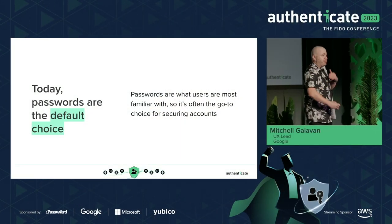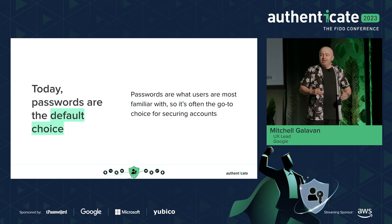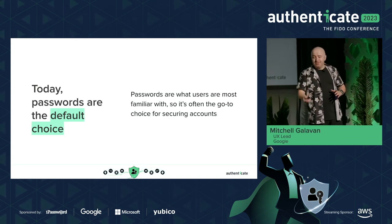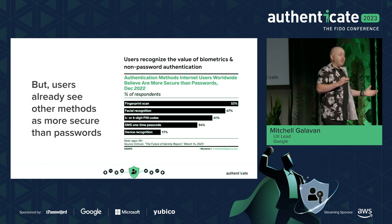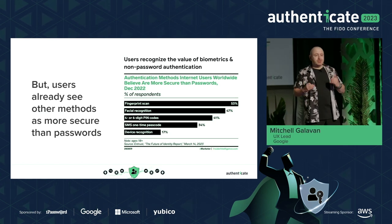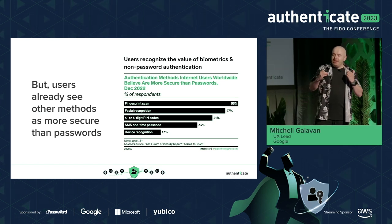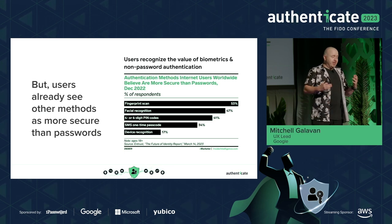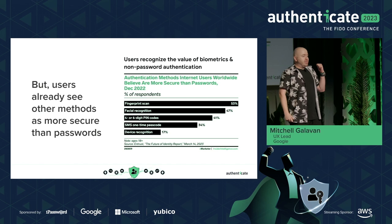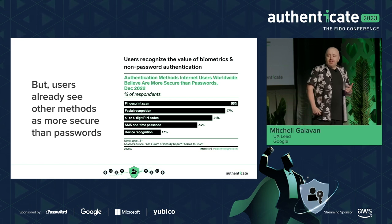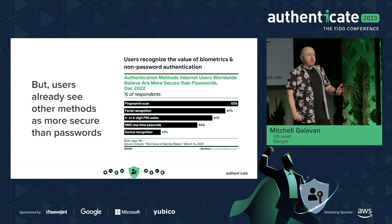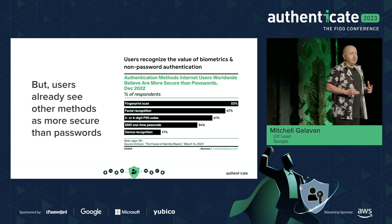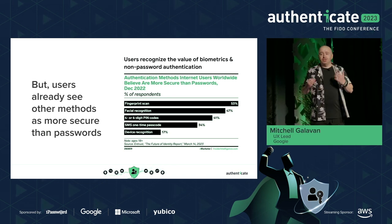Passwords are what users are super familiar with — it's like muscle memory, so it's often the go-to choice for securing accounts. But even today, before passwordless is the norm, we see that users recognize the value of biometrics. Things like fingerprint scan, facial recognition, pin codes, and SMS codes — people see these as more valuable, useful, and secure than passwords.